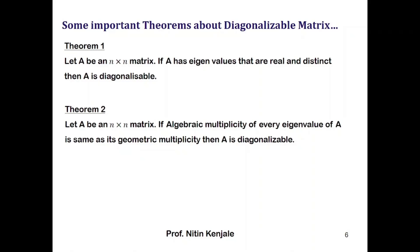Now, what if the eigenvalues of A are not all real or distinct? In that case we have to follow Theorem 2, which says that for a square matrix A, if the algebraic multiplicity of every eigenvalue is the same as its geometric multiplicity, then A is diagonalizable.